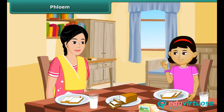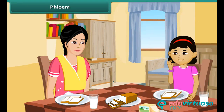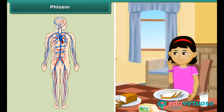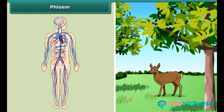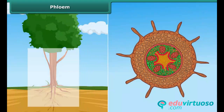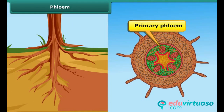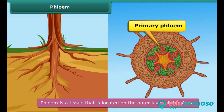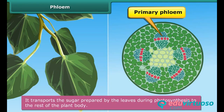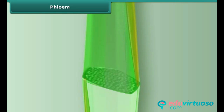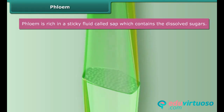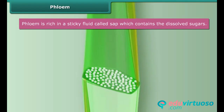Rhea is eating her breakfast in a hurry. Her mother advises her to chew the food properly so that the nutrients are absorbed by the body. Human beings and animals have a circulatory system that transports the nutrients absorbed from food to the different parts of the body. Plants have phloem to perform this task. Phloem is a tissue located on the outer layer of the stem. It transports the sugar prepared by the leaves during photosynthesis to the rest of the plant body. Since it transports sugar, phloem is rich in a sticky fluid called sap which contains the dissolved sugars.